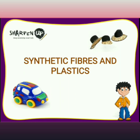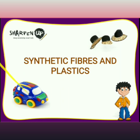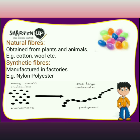Now let's discuss the types of fibers. There are two types of fibers: natural fibers and synthetic fibers, also called human-made fibers. Natural fibers are those which are obtained from plants and animals — for example, cotton, wool, etc.